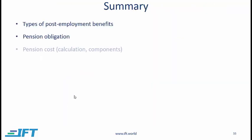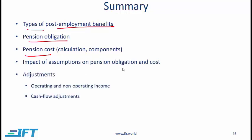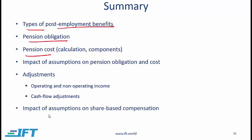This brings us to the end of the reading. Here is a summary of the main points. You should know the different types of post-employment benefits. The most testable part is the pension obligation and pension cost — the pension obligation is the present value of future obligations. You need to understand the different pension cost components, how to calculate them, the impact of assumptions on pension obligation and cost, how to make adjustments for non-operating components of pension expense, how to make cash flow adjustments, and the impact of assumptions on share-based compensation, specifically with stock options.